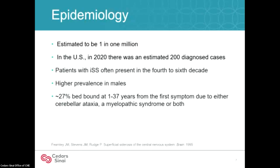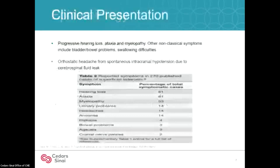Patients with infratentorial superficial siderosis often present in the fourth to sixth decade because it's a slowly progressive disease, with a higher prevalence in males, thought to be due to higher incidence of trauma. Approximately 27% are bed-bound at one to 37 years from the first symptom due to cerebellar ataxia, myelopathic syndrome, or both. The cardinal symptoms are progressive sensorineural hearing loss and ataxia — these patients are often misdiagnosed with cerebellar ataxia. In a table from Dr. Levy, hearing loss was 81%, ataxia 81%, myelopathy 53%, with non-classical symptoms including anosmia, bowel and bladder symptoms, cranial nerve palsy, and headaches from intracranial hypertension due to the CSF leak.